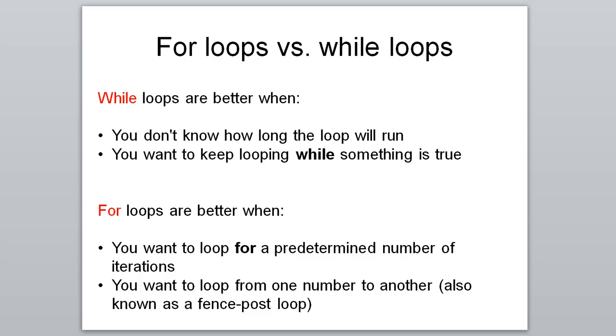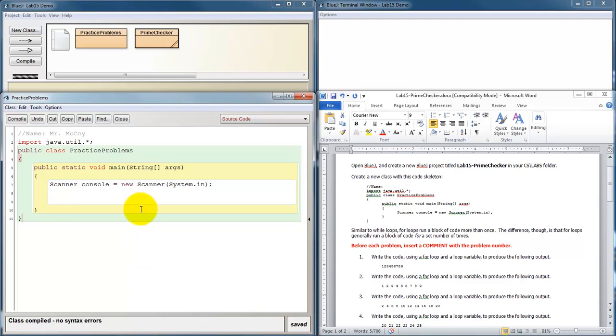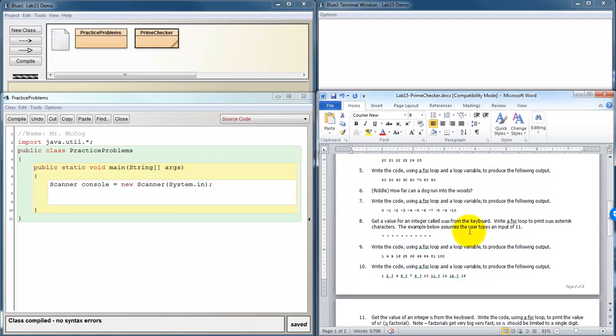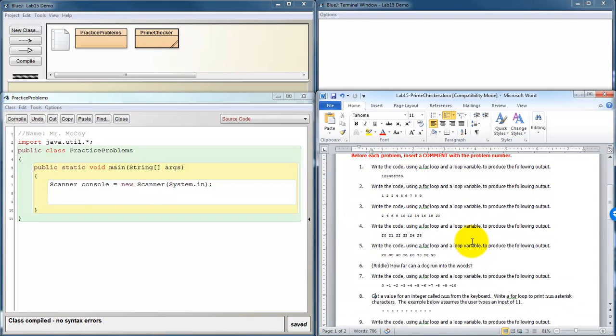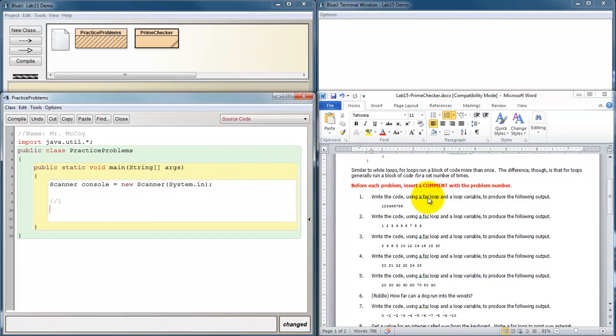So you want to do some practice problems? Alright, I've got BlueJ set up. I've got my code skeleton over here. It includes scanner stuff even though we don't actually get any user input until problem eight, I think. Let's go ahead and do the first couple. Problem one. Write the code using a for loop and a loop variable to produce the following output. So I need a loop variable. I'm going to call it i. Now what's going to be my starting position? I'm going to start at one.